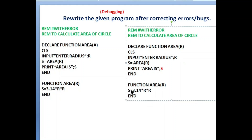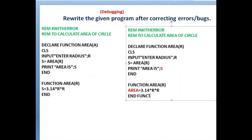Inside the function definition — function area(r) — we wrote 's' again, but we need to write 'area'. Area is the function name and it is used to return the value to the main module. So we write area equals to the formula: pi r squared. The value will then be returned. After the formula, again we need to write 'end function'. There are three errors in this program and we have corrected them.